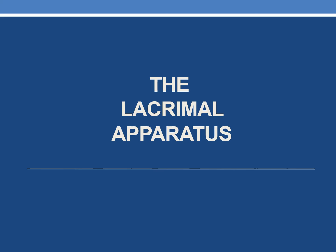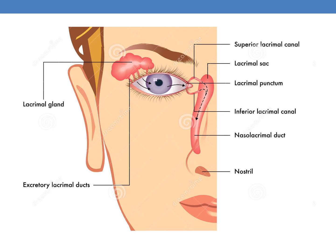The next accessory structure is the lacrimal apparatus. Here you can see the anterior view of the lacrimal apparatus: the lacrimal gland above, the superior lacrimal canal, the lacrimal sac, the lacrimal punctum, the inferior lacrimal canal, the nasolacrimal duct, and finally the nostril.